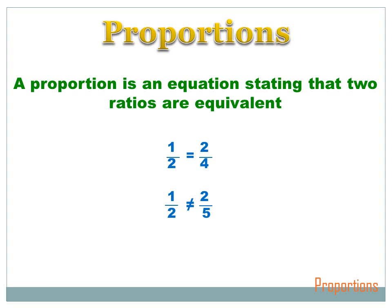Now we know that one over two does not equal two over five. The numerator doubles from fraction one to fraction two, but if we try to double the denominator on the first fraction, we get four — and that's not equal to the denominator on the second fraction, so they're not proportional. We can also see that if we reduce two over four to its lowest form, we get one over two. So if two fractions are proportional, you can reduce one fraction to its simplest form and it'll equal the simplest form of the other fraction.